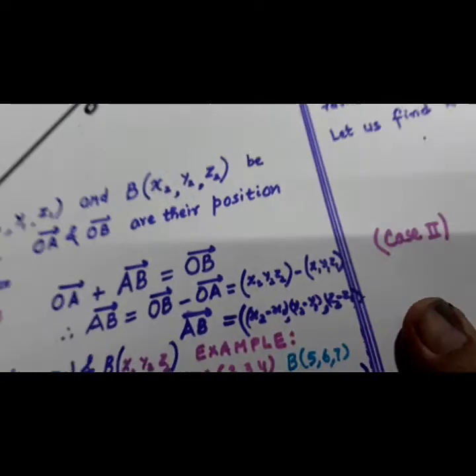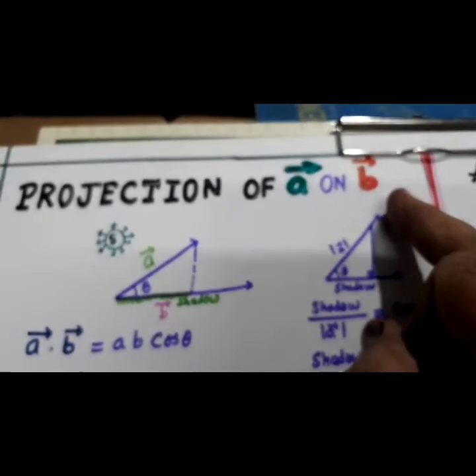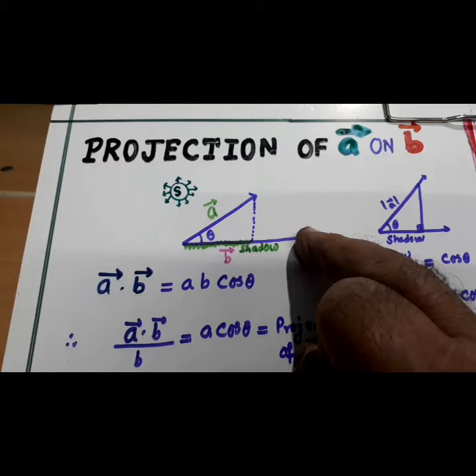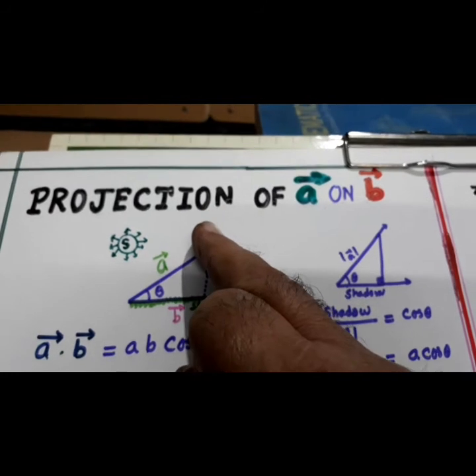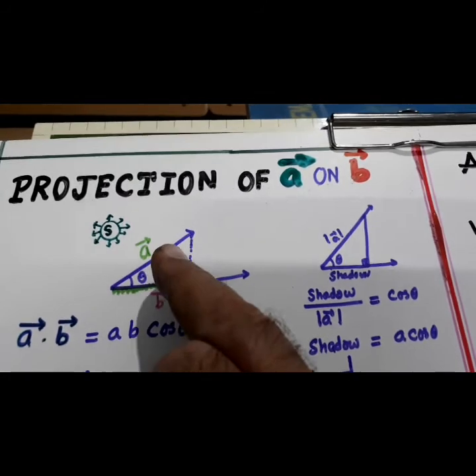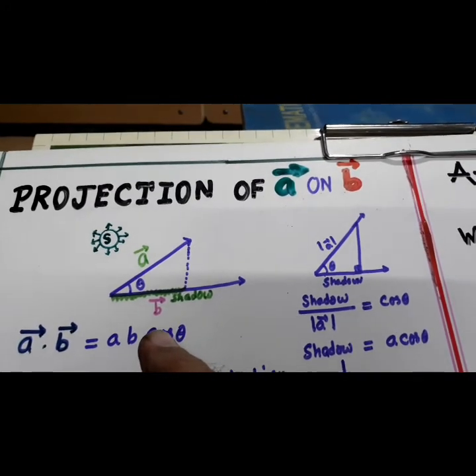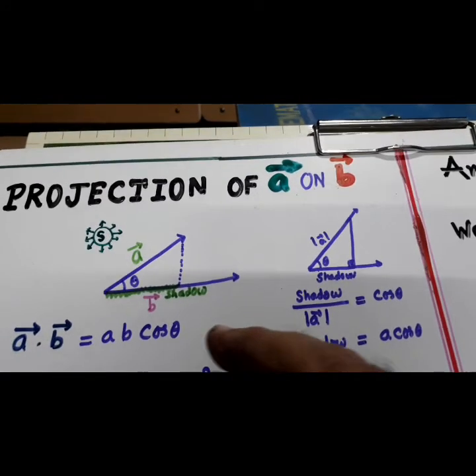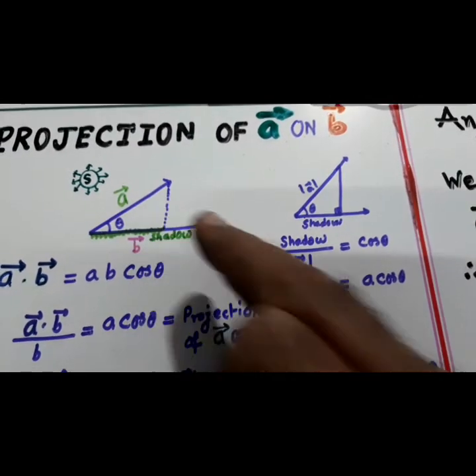Now let us go for another concept that is projection of vector a on b. Now this is vector a and this is vector b. This S stands for sun. No. Projection means shadow. Projection means shadow. Look here. Shadow of A will form on B. This is a shadow here.